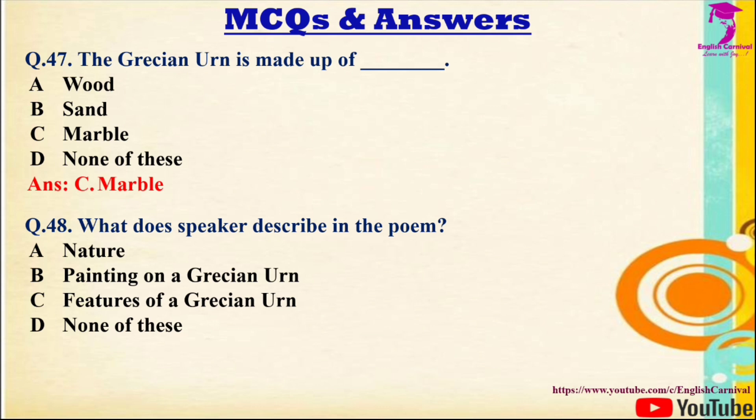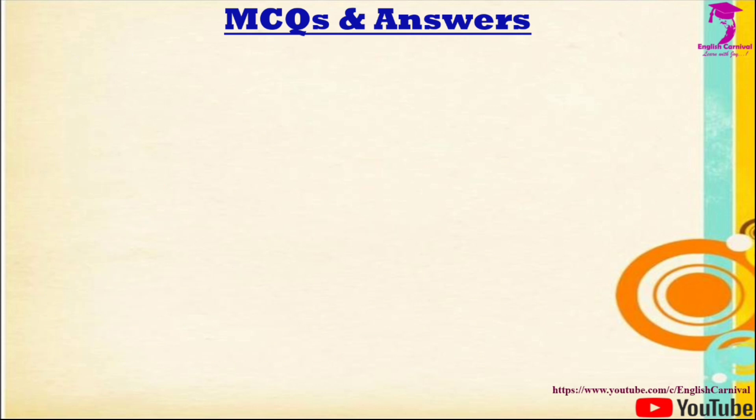Question 48: What does the speaker describe in the poem? Options: A) Nature, B) Painting on a Grecian Urn, C) Features of a Grecian Urn, D) None of these. Correct answer is B — painting on a Grecian Urn.